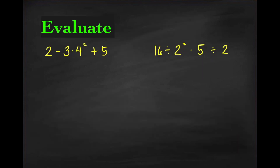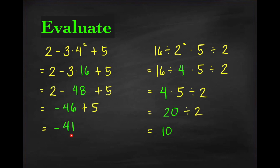You may pause this video if you want to try this problem first. We want to evaluate 2 minus 3 times 4 squared plus 5. Applying PEMDAS, the answer is negative 41. First, apply exponent: 4 squared is 16. Then multiplication: 3 times 16 is 48. Then subtraction and addition from left to right: 2 minus 48 is negative 46, plus 5 is negative 41.